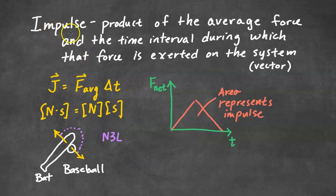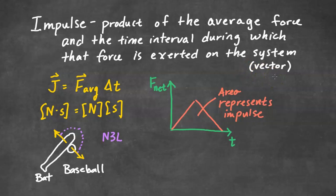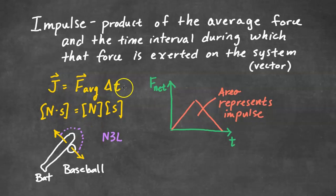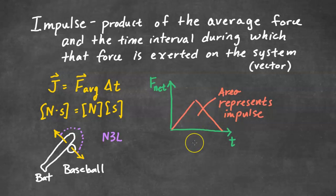Now we're going to define impulse. Impulse is the product of the average force and the time interval during which that force is exerted on the system. Impulse is a vector, which means it has a magnitude and a direction. The equation for impulse is J — sometimes we use the symbol I, but often it will be capital J — equal to average force times the time interval. The unit for impulse is Newton-seconds. On a net force versus time graph, the area under the curve represents the impulse. You can also have a negative area that would represent a negative impulse.